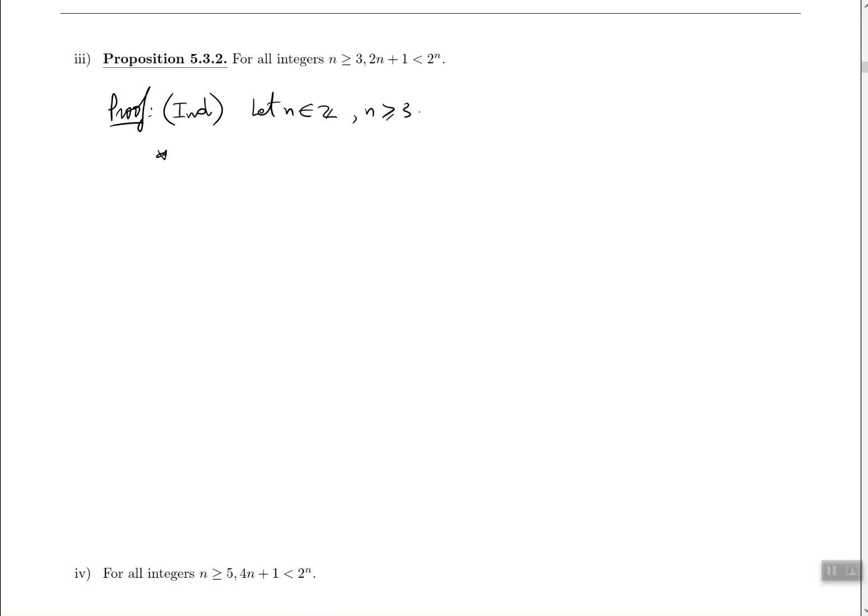So the base case is pretty straightforward. At this point it should be straightforward. n equals 3, that's the first element in the domain that we're working with, and we would like to show that the statement holds. So what I'm going to do is I'm going to search for the left-hand side of my statement, which in this problem is 2n plus 1, but of course I'm replacing n with 3 because that's what n starts with. And so 6 plus 1 is going to be 7. So far everything is fine, no big deal.